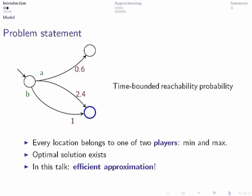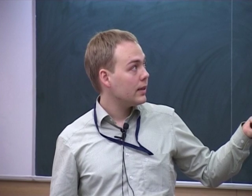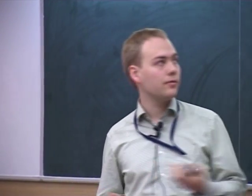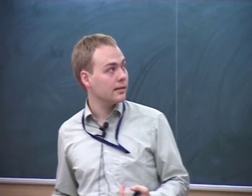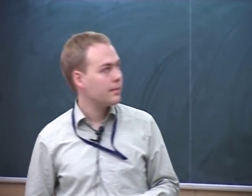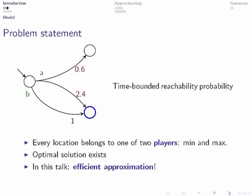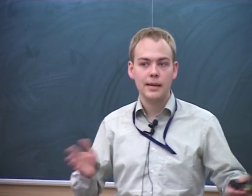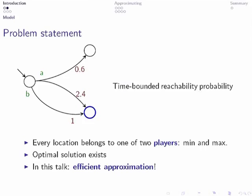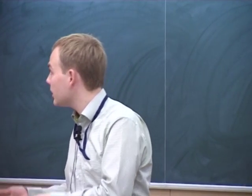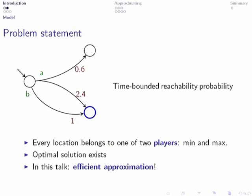The problem we consider is the time bounded reachability probability problem. Here also our two players come into play. We divide the space of locations into the sets of minimizing locations and maximizing locations or the location of the minimizing player and the maximizing player respectively. These players try to maximize or minimize the time bounded reachability probability. The good news is that an optimal solution to this exists, so there exist optimal strategies for the players. And in this talk we will now cover the efficient approximation of these probabilities.